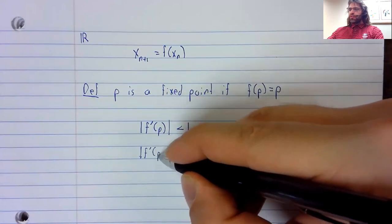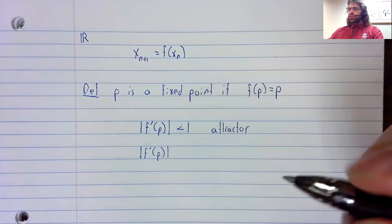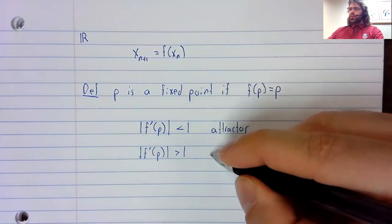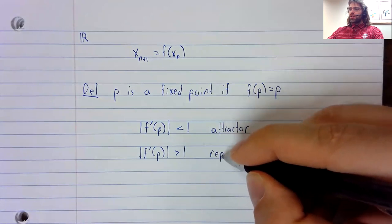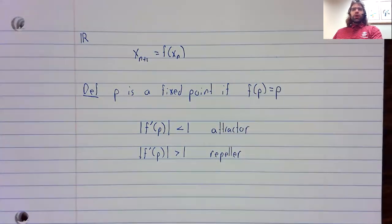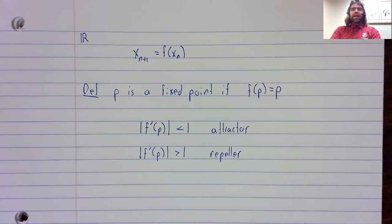If the absolute value is greater than one, it's unstable. We call it a repeller.